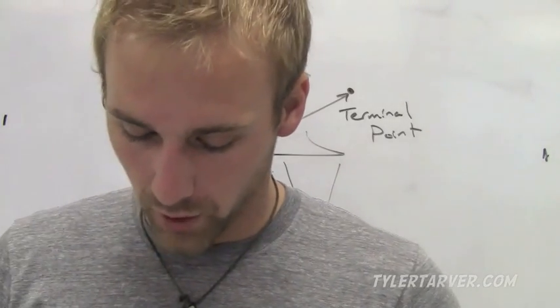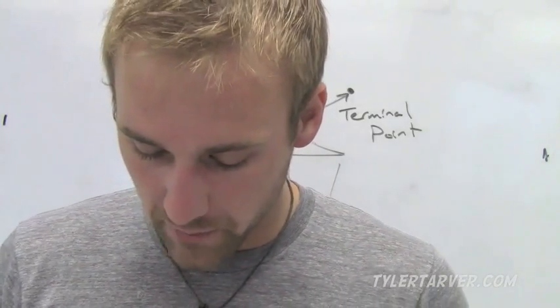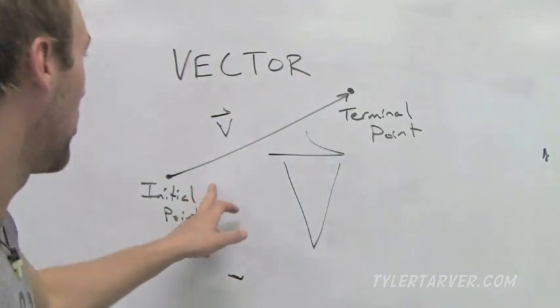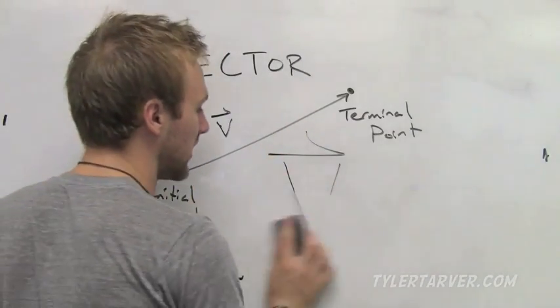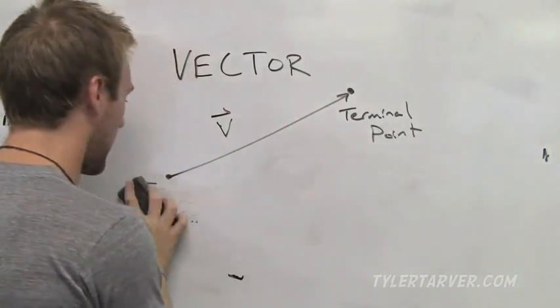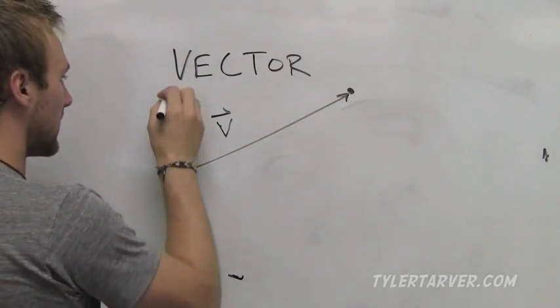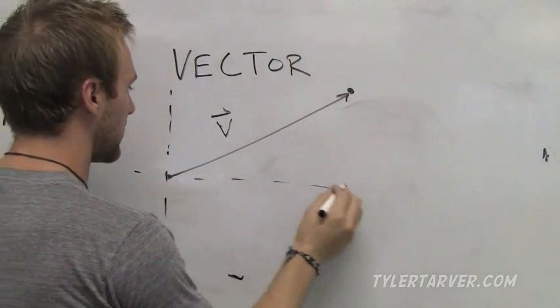A vector can also be named using component form. Now a component form of a vector lists the horizontal and vertical change from the initial point to the terminal point. So pretend like we're on a coordinate plane.